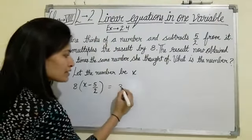Now 2 divides 40 to give 20. So 8x minus 20 equals to 3x.